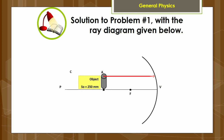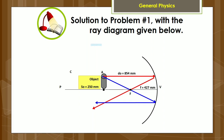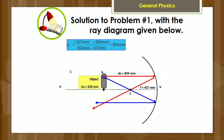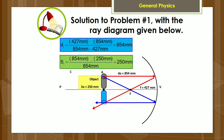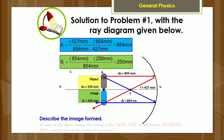Here is the solution to problem number one, with the ray diagram given below. As seen in the figure above, the image is the same size as the object, inverted, real, and located at the center of curvature C.